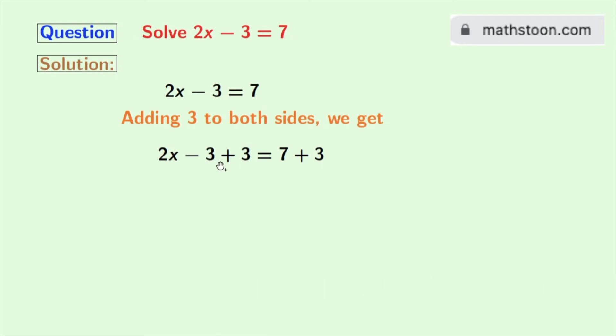Look that we have minus 3 and plus 3 in the left hand side and that means 0. So we are left with 2x and in the right hand side 7 plus 3 gives us 10.